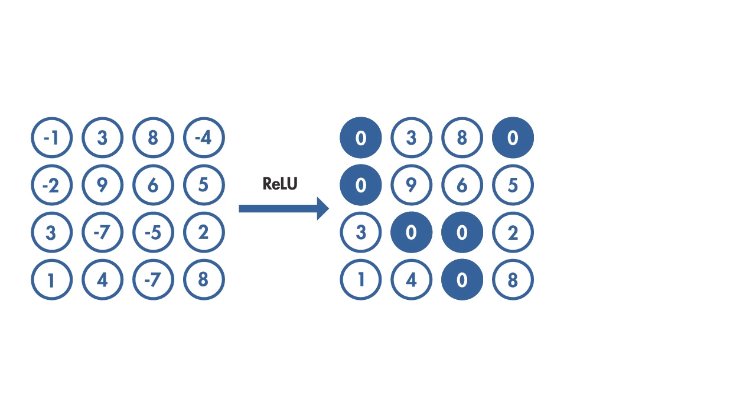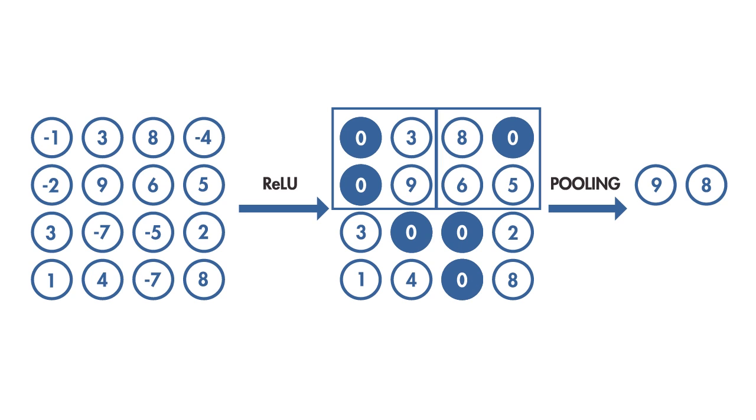You can further transform the output of the activation step by applying a pooling step. Pooling reduces the dimensionality of the feature map by condensing the output of small regions of neurons into a single output.